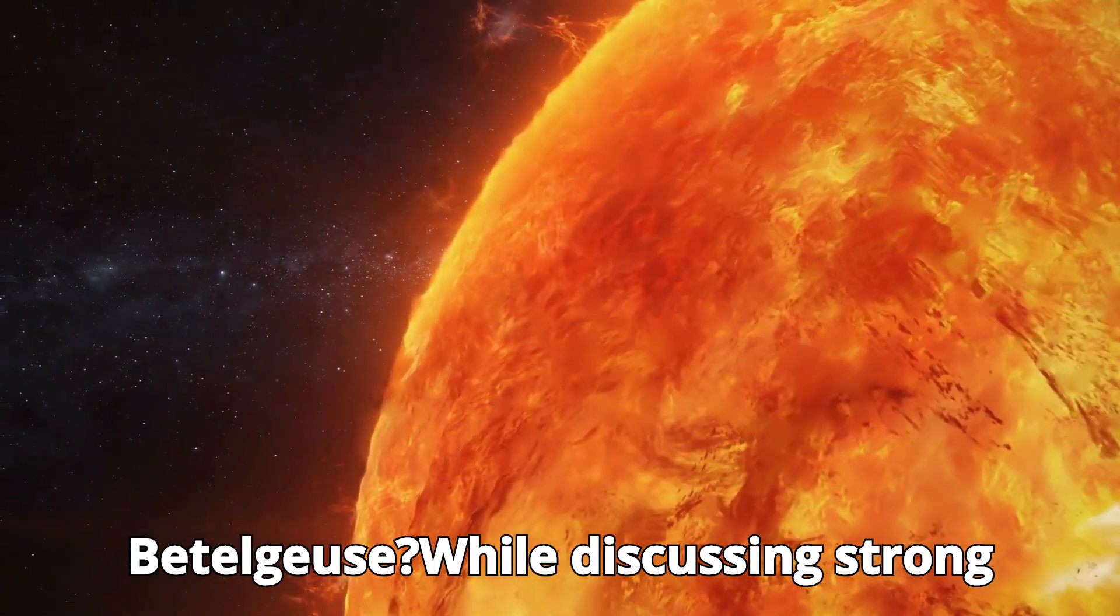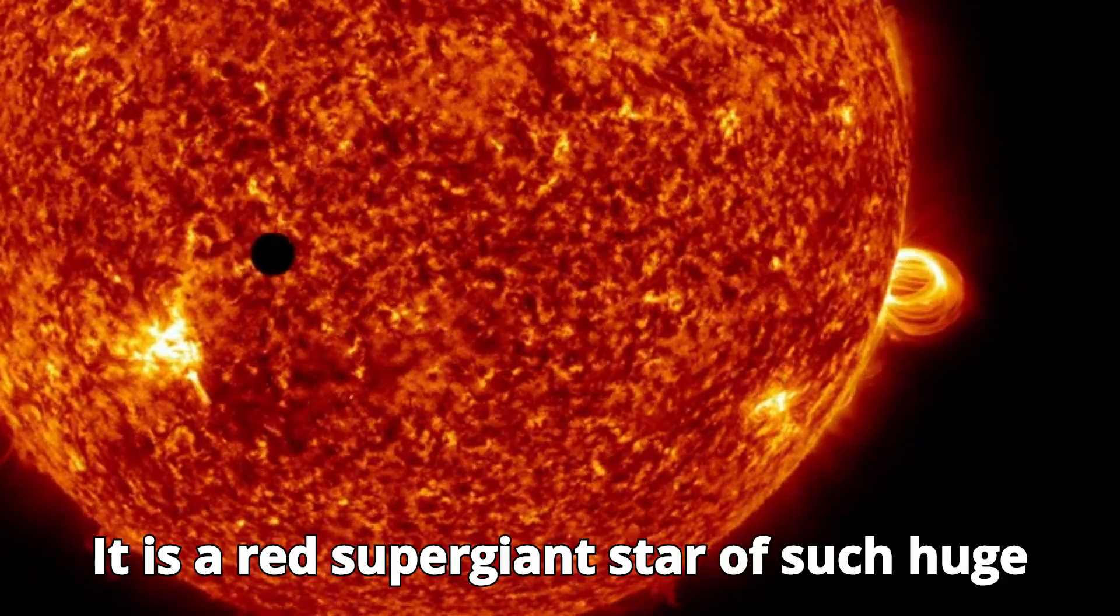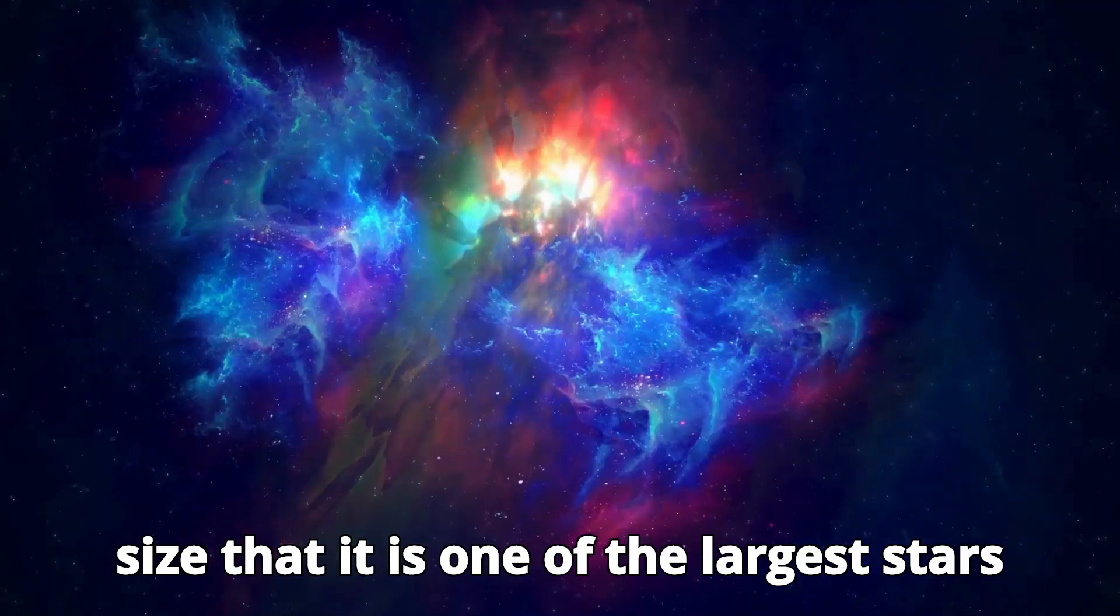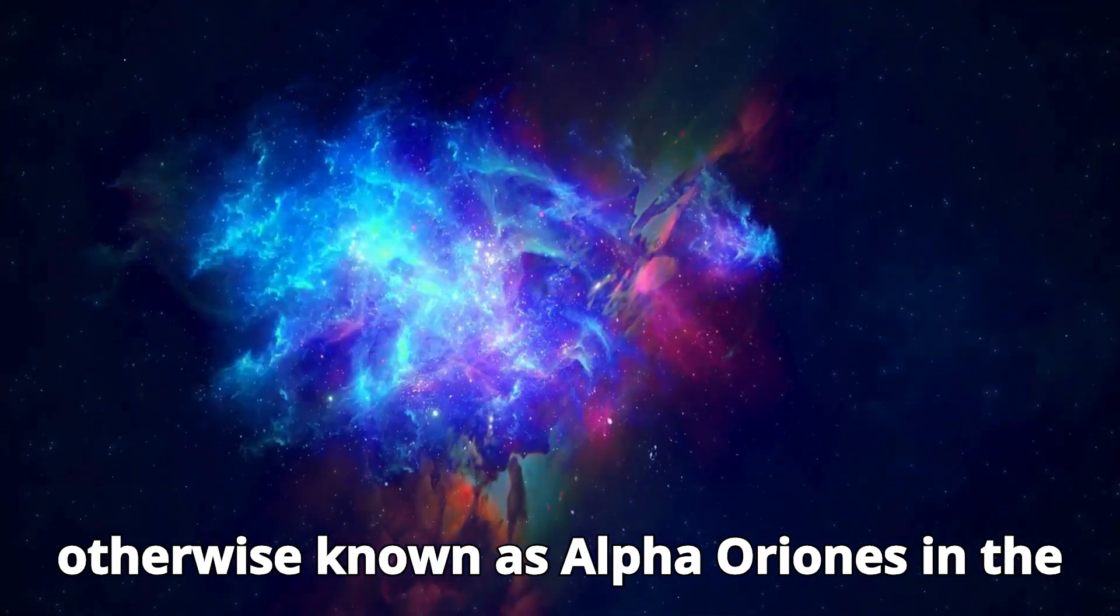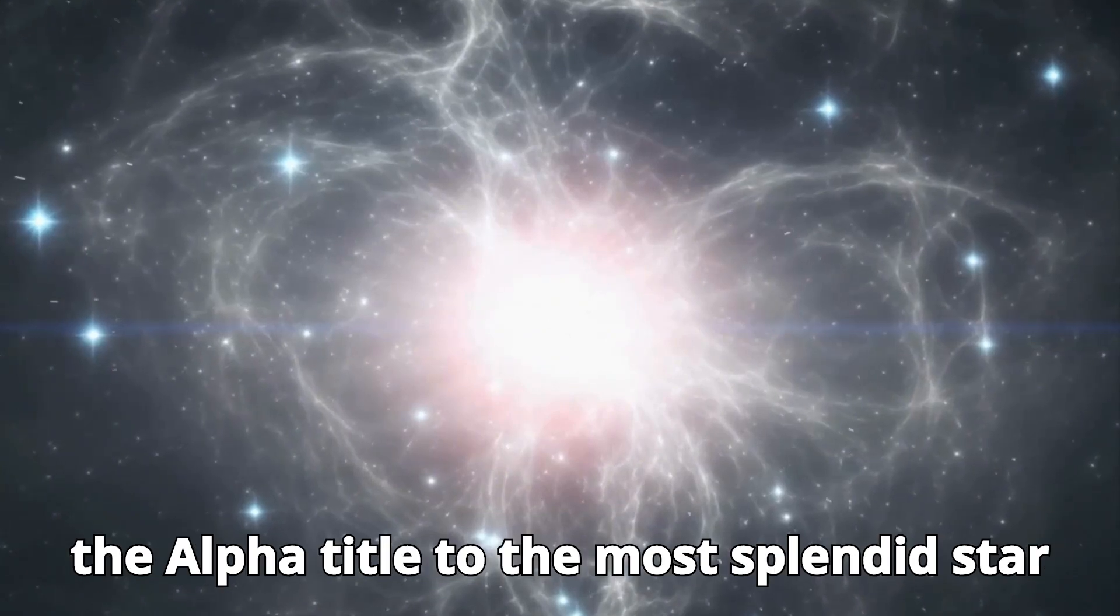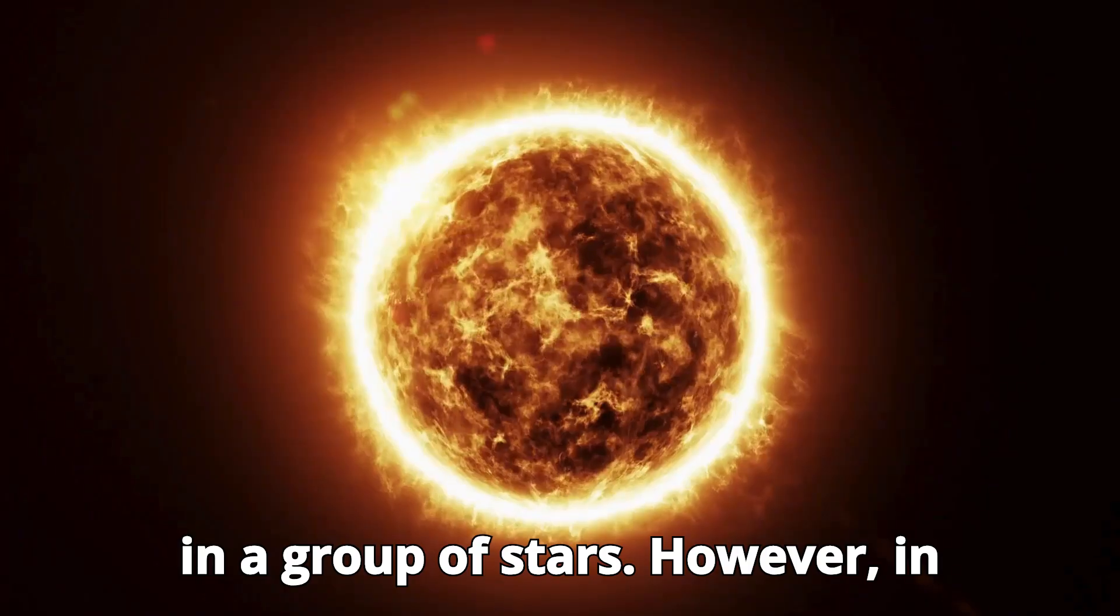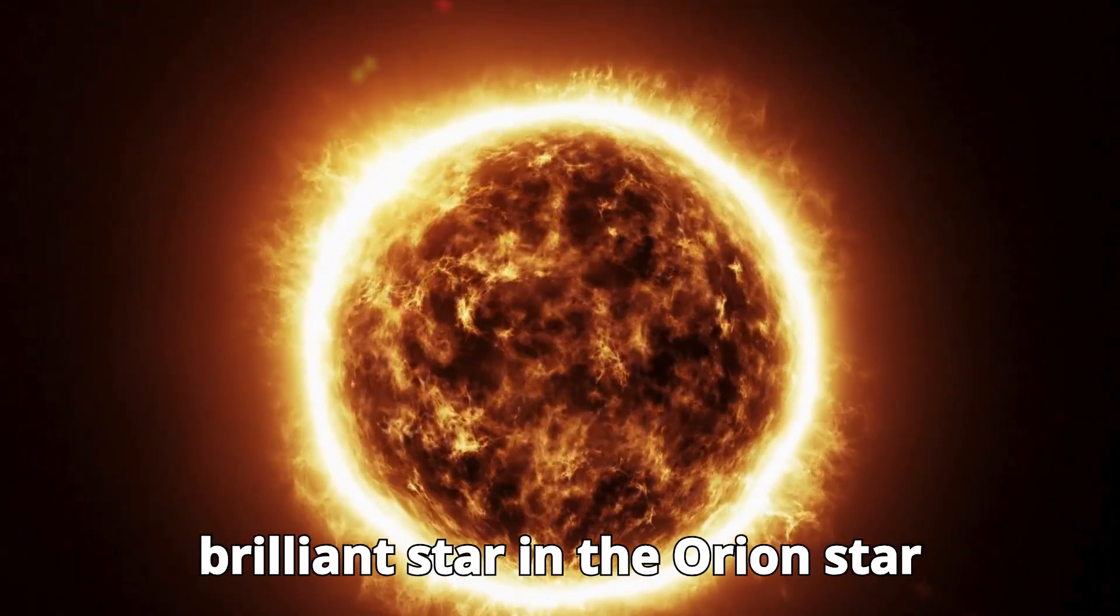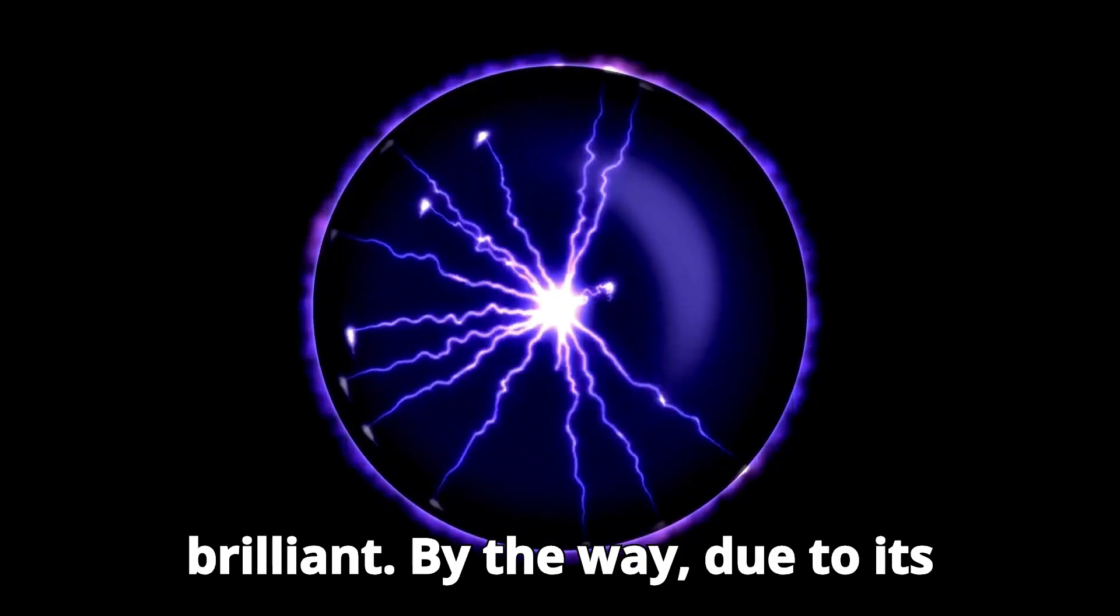While discussing strong stars, one can't disregard Betelgeuse. It is a red supergiant star of such huge size that it is one of the largest stars apparent to the naked eye. Betelgeuse is otherwise known as Alpha Orionis in the Bayer designation system, which appoints the Alpha title to the most splendid star in a group of stars. However, in reality, Betelgeuse is the second most brilliant star in the Orion star grouping, with Riel being the most brilliant.